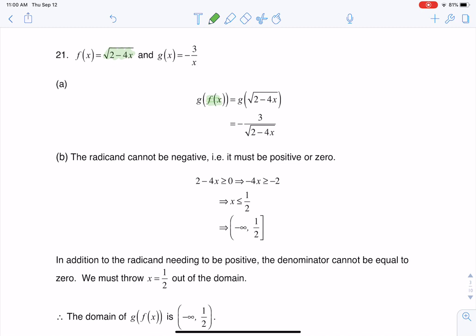And then when I get to this point, I'm going to use the g rule. So this is g of x, if you will, but my x is a lot uglier than just x, it's the square root of 2 minus 4x. So the rule said whatever was in the parentheses, go ahead and put it in the denominator.